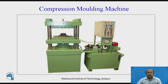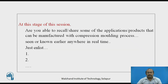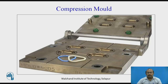This is one of the compression molding machines. At this stage of the session, are you able to recall and share some of the application products that can be manufactured with the compression molding process — products you may have seen or known in real time? This is one of the compression molds, showing how it exactly looks. You can see that the products manufactured with this particular compression mold are already placed here.